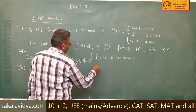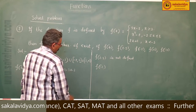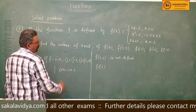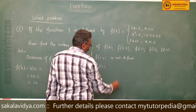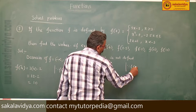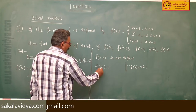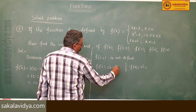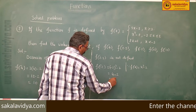Next, f(−2). The value −2 falls in the interval [−2, 2], so in this case the function is x² − 2. Therefore, f(−2) = (−2)² − 2 = 4 − 2 = 2.